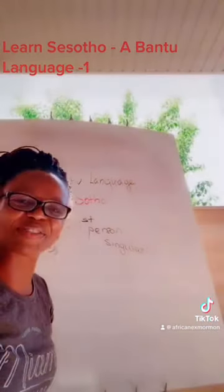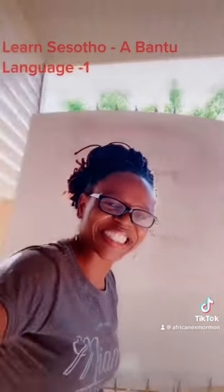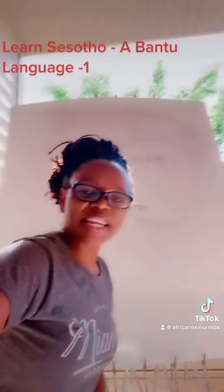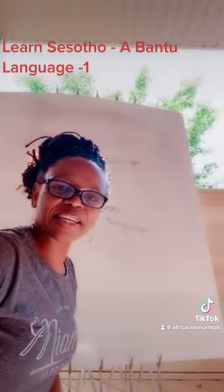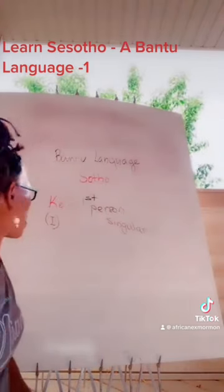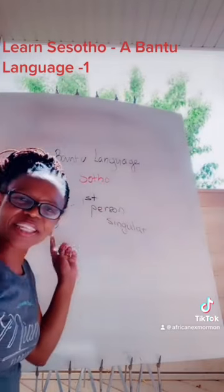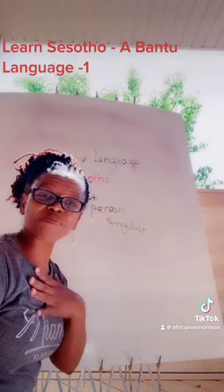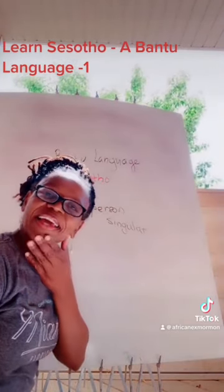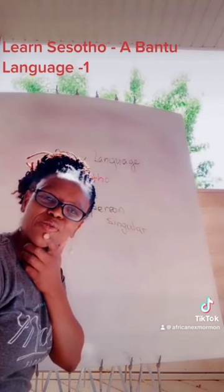I brought the camera outside — I don't know if it's going to work. Okay, so now you know how to say 'gay'. 'Gay' means 'I'. And let's work with a few verbs.